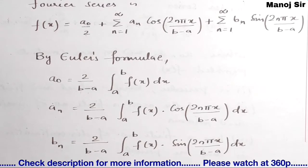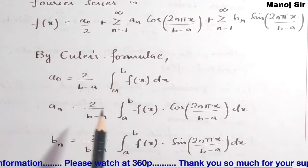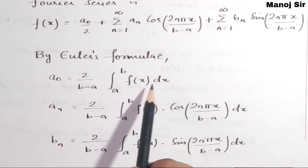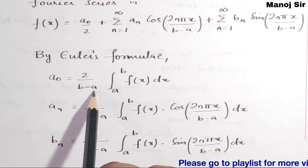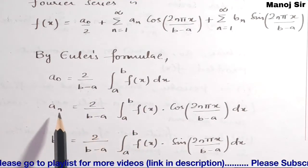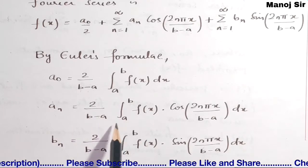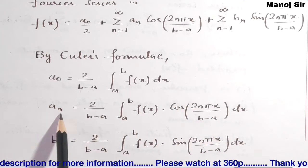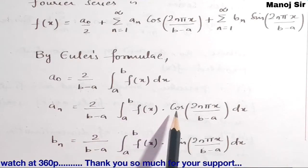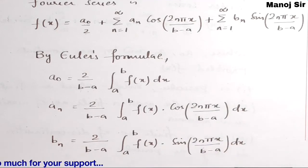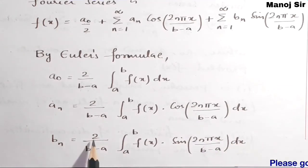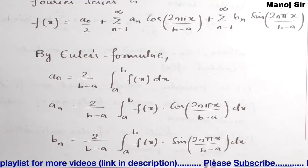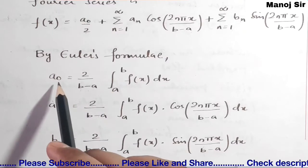We use Euler's formula. For a₀: a₀ = (2/(b−a)) ∫ₐᵇ f(x) dx. For aₙ: aₙ = (2/(b−a)) ∫ₐᵇ f(x) cos(2nπx/(b−a)) dx. For bₙ: bₙ = (2/(b−a)) ∫ₐᵇ f(x) sin(2nπx/(b−a)) dx. By Euler's formula we find a₀, aₙ, bₙ and then substitute those values back.